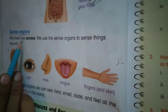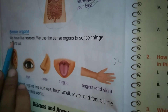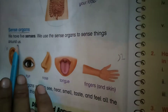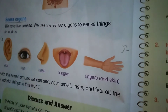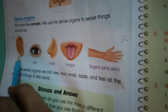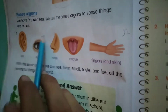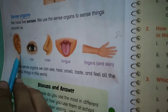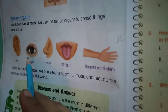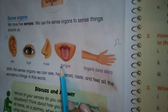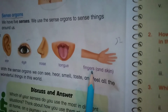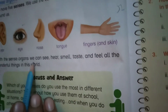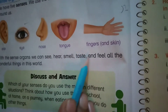We have five senses. We use our sense organs to sense things around us. The five senses are: ears (hearing), eyes (sight), nose (smell), tongue (taste), and fingers and skin (touch). With our sense organs we can see, hear, smell, taste, and feel all the wonderful things in this world.